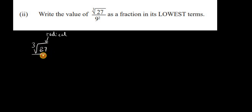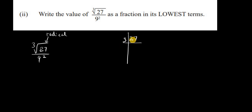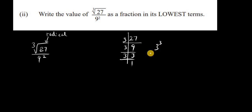Let's use prime factors, starting with 3. 2 cannot enter 27 without a remainder, so we use 3. 3 goes into 27 nine times; 3 into 9 three times; and 3 into 3 once. If we multiply all these, we end up with 3 to the third power, which means the cube root of 27 is 3, since 3 times 3 times 3 gives us 27.